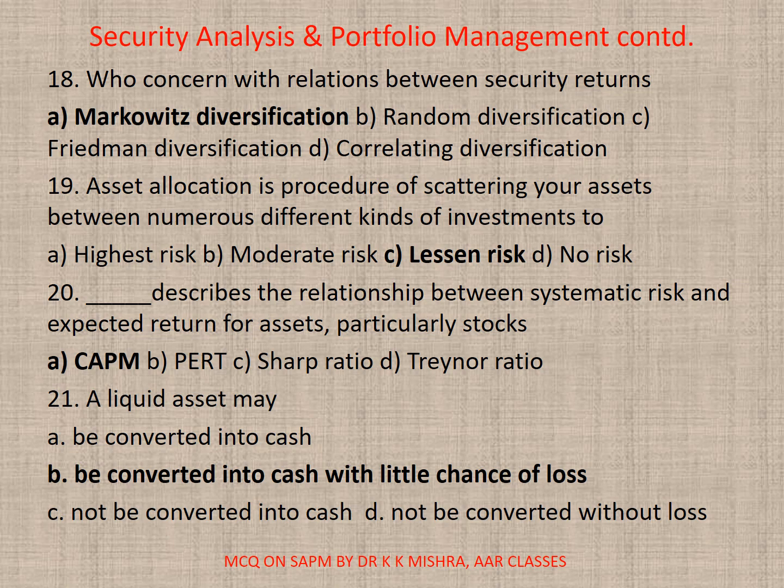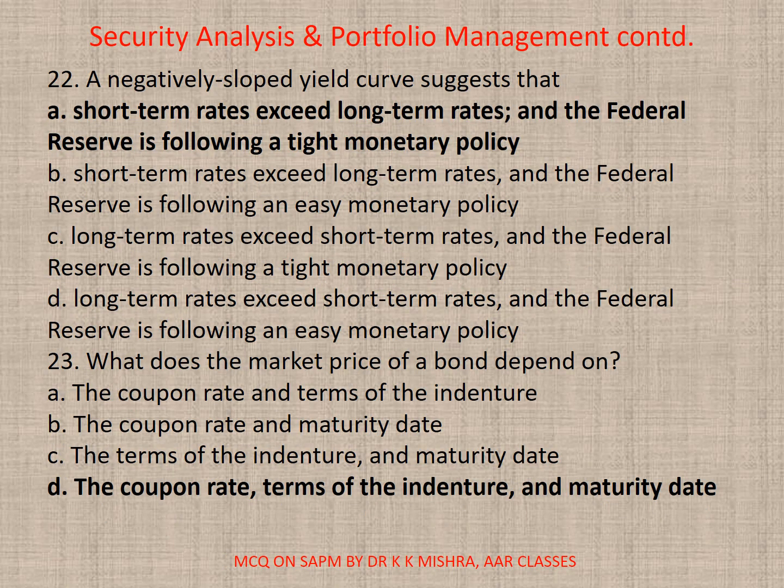Question 21: A liquid asset may be converted into cash with little chance of loss. Question 22: A negatively sloped yield curve suggests — correct option is C — that short-term rates exceed long-term rates and the Federal Reserve is following a tight monetary policy. Question 23: What does the market price of a bond depend on? Correct option is D — the coupon rate in terms of the indenture and maturity date.